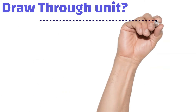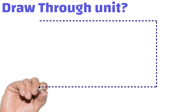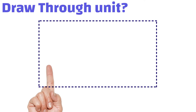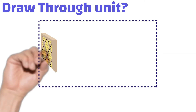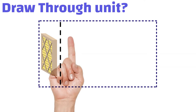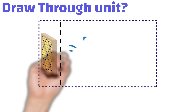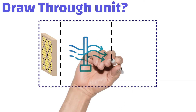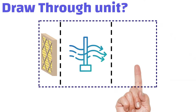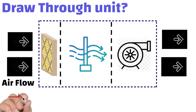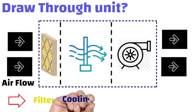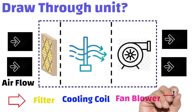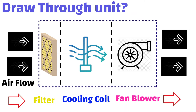What is a draw through unit? The fan blower is located downstream of the unit, which is after the cooling coil. The fan pulls the air through the mixing box, filters, and cooling coil before discharging it from the fan outlet to the space to be conditioned or to the ducting network.